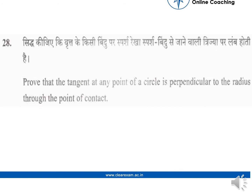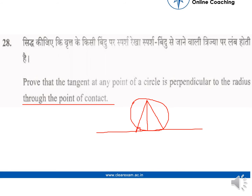Prove that the tangent at any point of a circle is perpendicular to the radius through the point of contact. We need to prove this as a theorem. We have a circle and a tangent line — from any point of contact, we need to prove that the tangent is perpendicular to the radius through that point of contact.